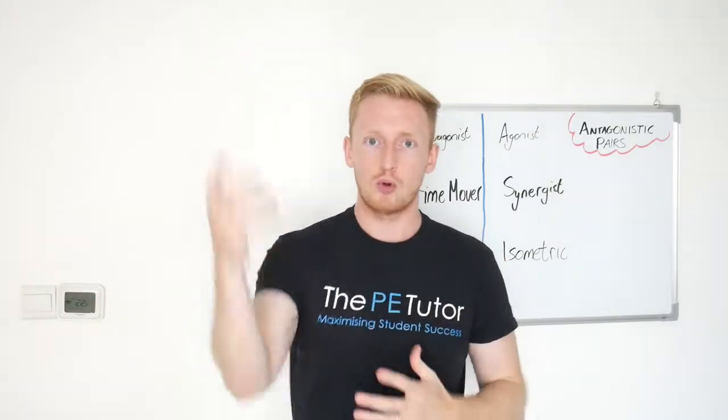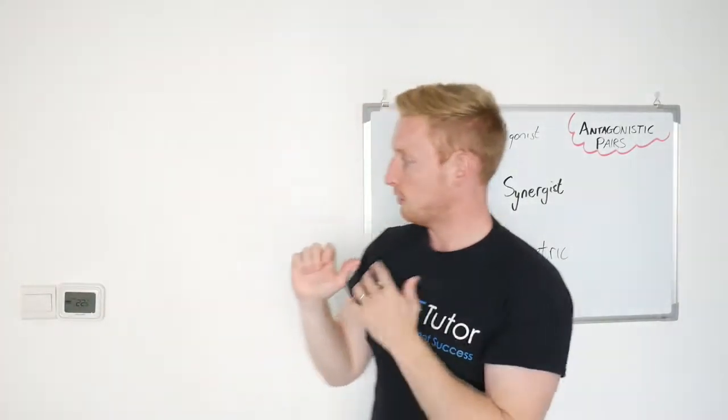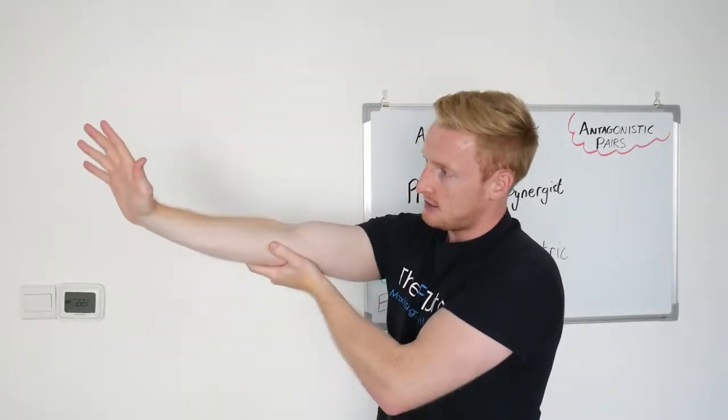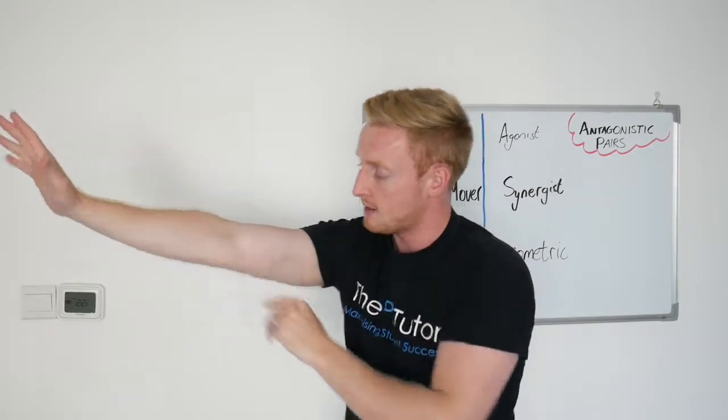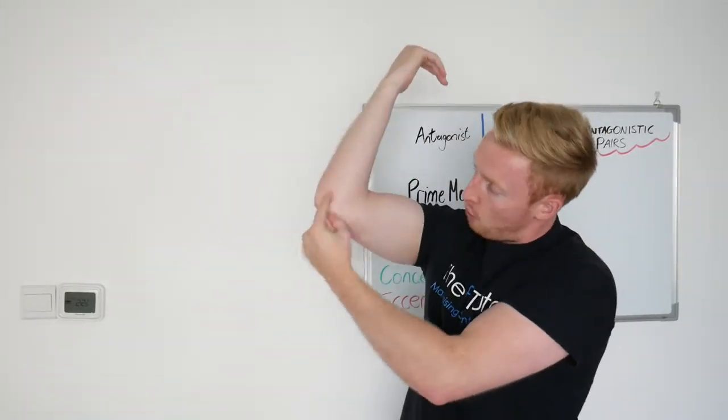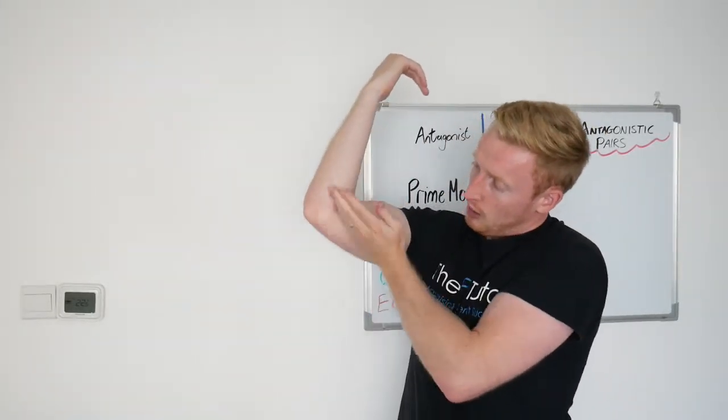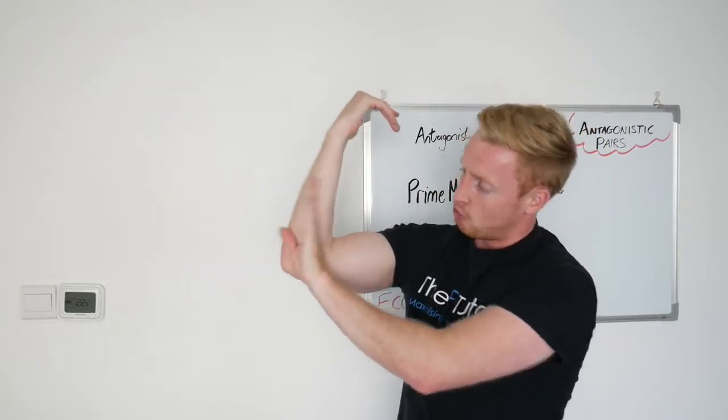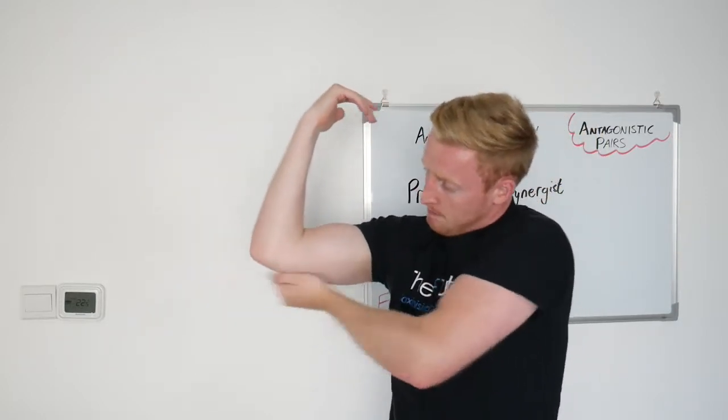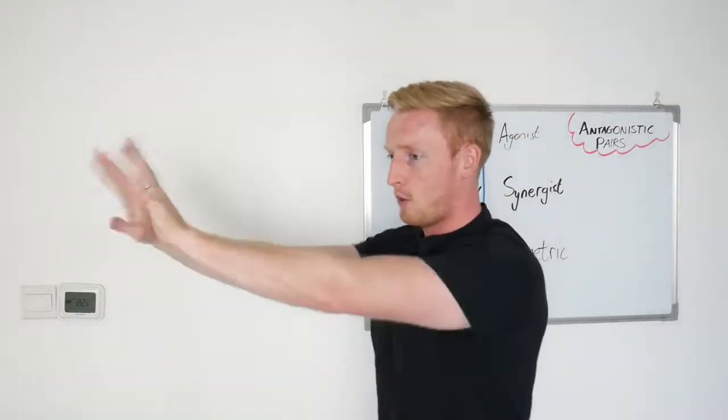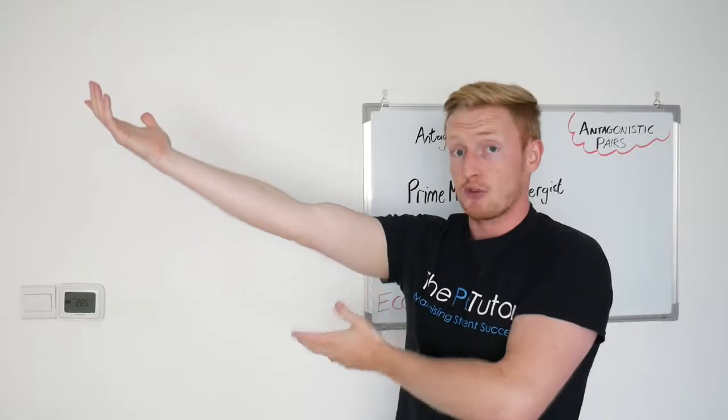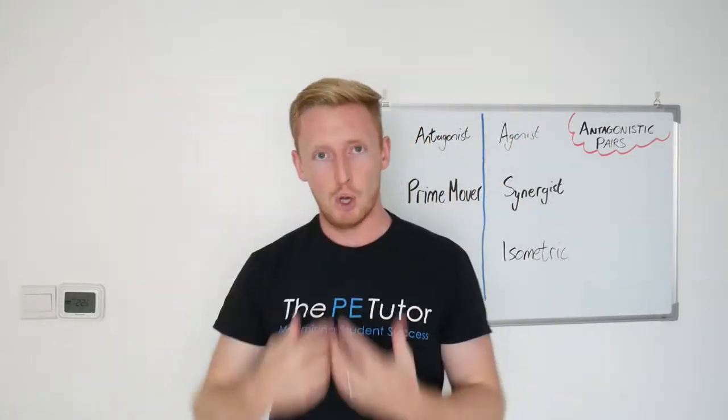One quick example would be the tricep extension. If you wanted to push something, yes it feels like your elbow is acting in a way that you're pushing an object, but it's because the tricep is pulling on the end of the bone, which is then levering itself around the humerus. The tricep pulls and levers the arm forwards. So it looks like pushing, it feels like pushing, but the muscle itself is actually pulling.